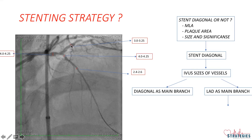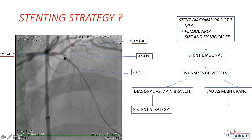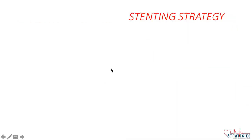The MLA of diagonal is around 2.4 mm square with a plaque area of more than 70%, and the vessel size is quite significant supplying a big territory, so I decided to stent the diagonal. Once we decided to stent diagonal, these sizes decide your stenting strategy — more than the angle. We have two approaches: either treat diagonal as the main branch or distal LAD as the main branch. As the distal reference of diagonal is matching more with the proximal reference than the distal reference of LAD, I decided to go with diagonal as the main branch. We can apply a two-stent strategy: one stent here and another into LAD — a 2.5 or 7.5 stent into LAD and a 3.25 stent with a 4 mm part.